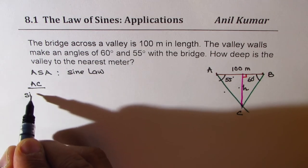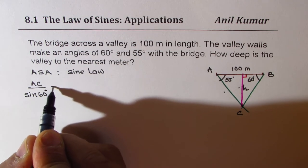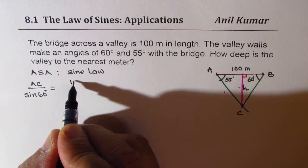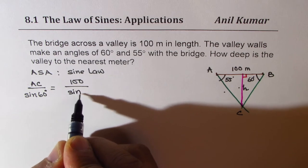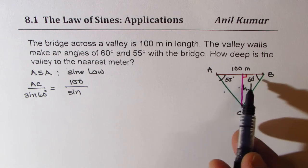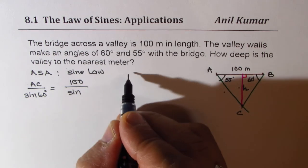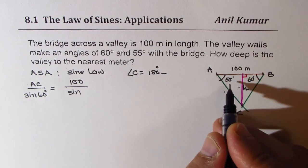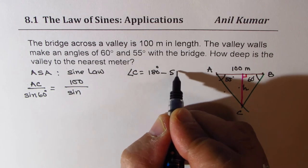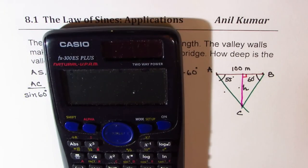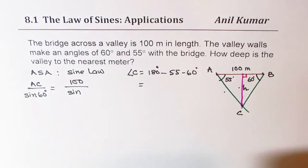So we'll write this as AC over sine of 60 degrees equals AB, the length 100 meters, over sine of angle C. Now from here, you can find what angle C is since you are given two angles. So angle C equals 180 degrees, take away 55 and 60.